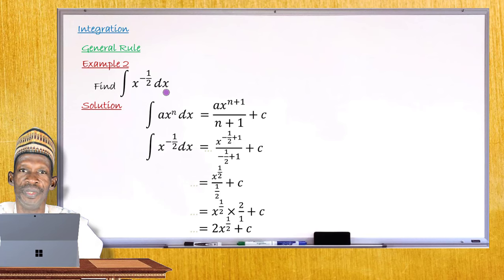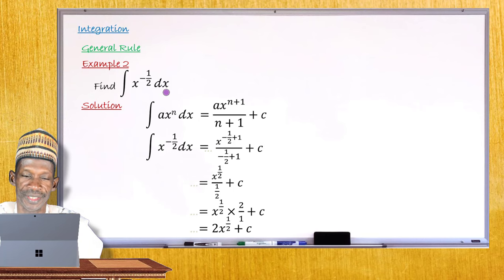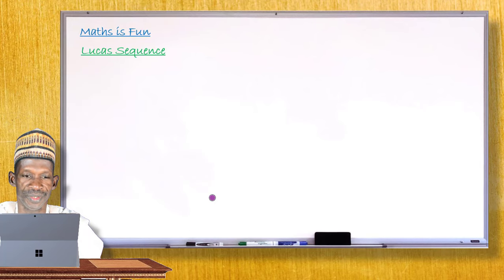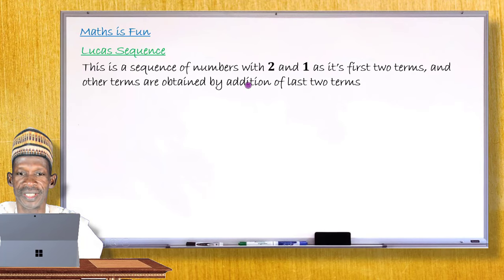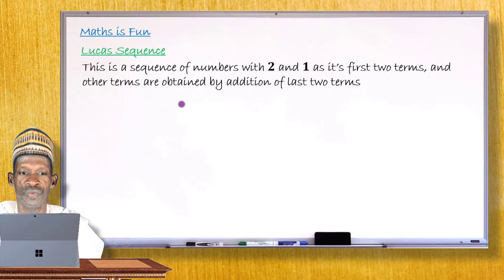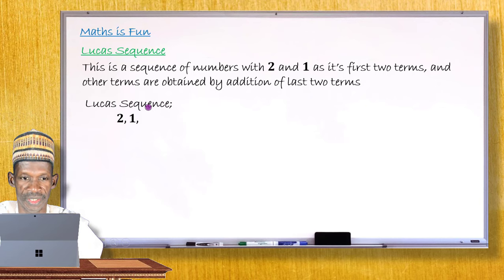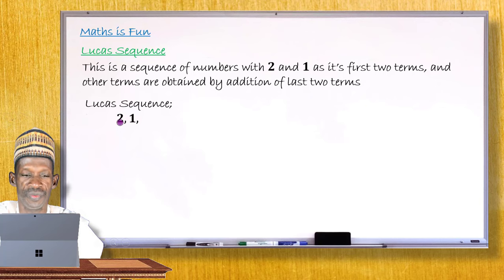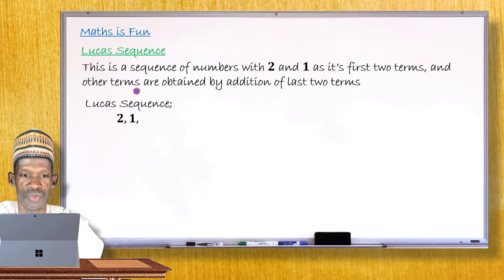With the few examples given, I hope you'll be able to find the integral of a general polynomial function. This is where I stop in this lesson. Let me move to the last segment and explain what the Lucas sequence is. The Lucas sequence is a sequence of numbers starting with 2 and 1 as the first two terms — 2 is the very first term and 1 is the second term. The other terms are obtained by adding the last two terms.